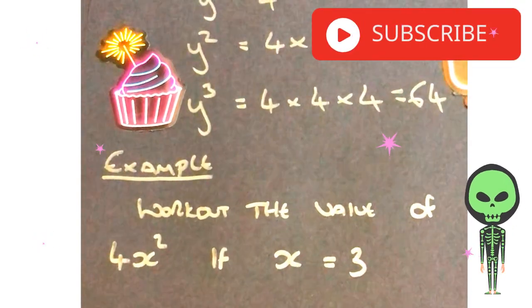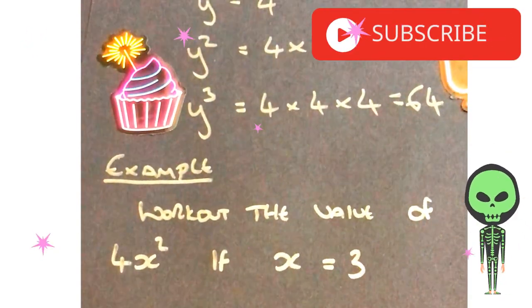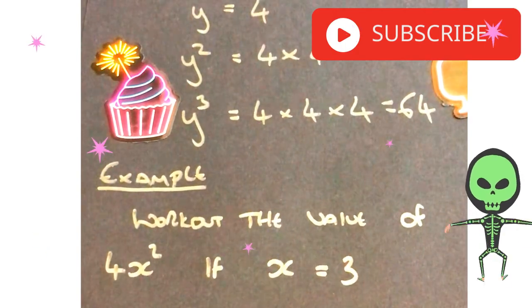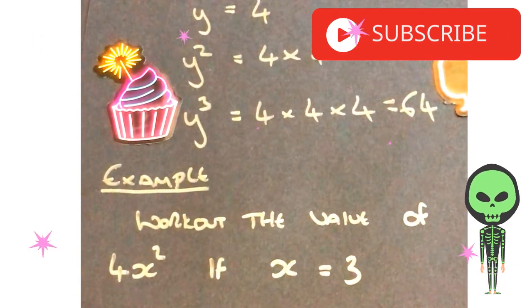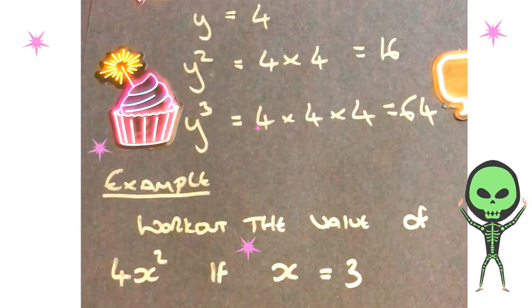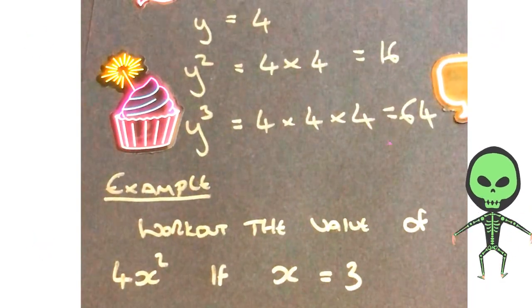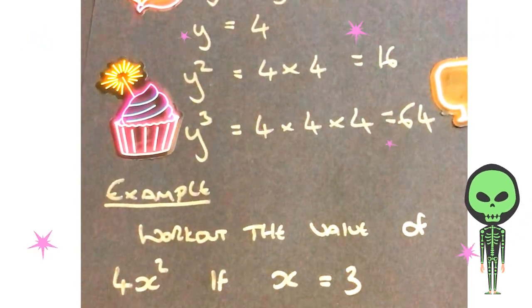Okay, so let's look at a more challenging question. Work out the value of 4x squared if x is equal to 3. So with this example, because we've got our indices here multiplied by 4, we're going to have to apply BIDMAS first.